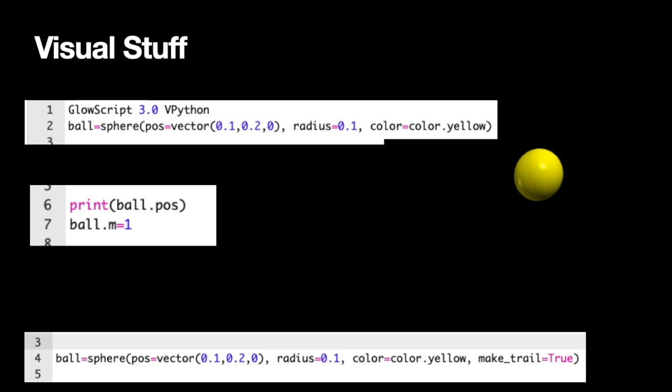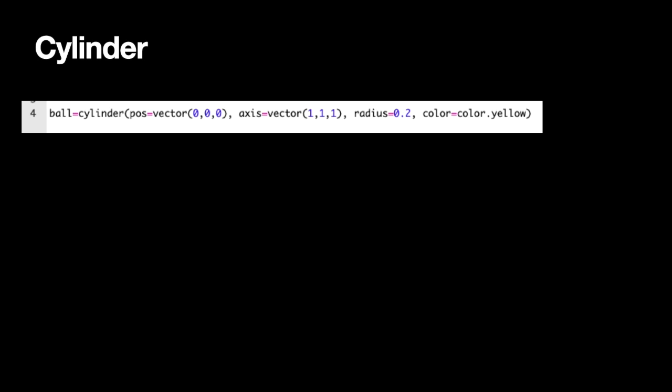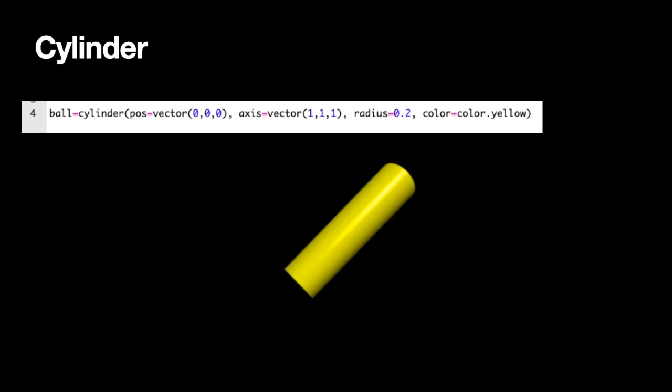Another thing: I can add 'make_trail = True' to the sphere, which adds a trail whenever the ball moves — that's kind of cool. Another object we'll use is a cylinder. You give it a position, an axis, a radius, and a color. The position is one end of the cylinder, the axis is a vector from that position to the other end, and radius is the radius.